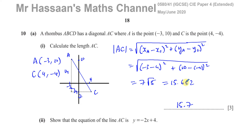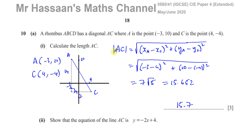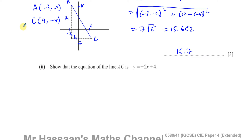So that's part A - it's actually a very short question. I just gave an explanation to help you understand where the length formula comes from - it comes from Pythagoras' theorem. Now part A part 2 says: show that the equation of the line AC is y = -2x + 4. So we have to show that the equation between these two points is y = -2x + 4.